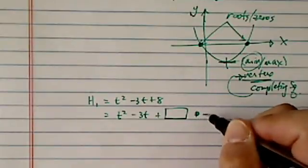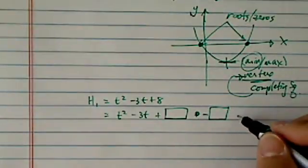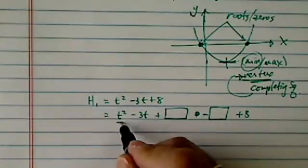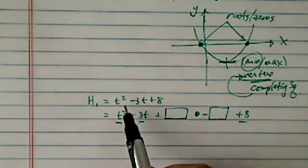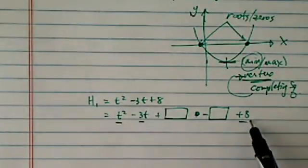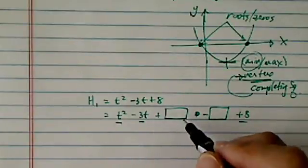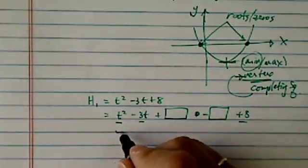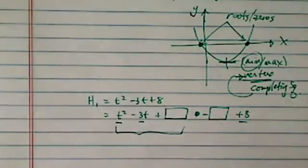You are adding a magic number, and you are going to subtract the same number, and the old parts I have not touched: t squared minus 3t plus 8. The reason I am going to add a number here is I want to regroup those three so that they become a complete square, thus completing square. That is why it is called completing square.